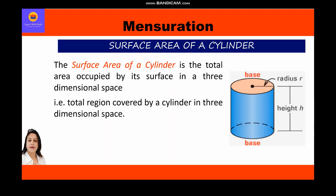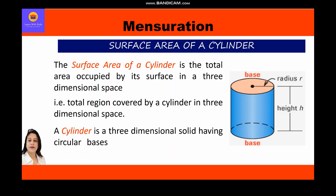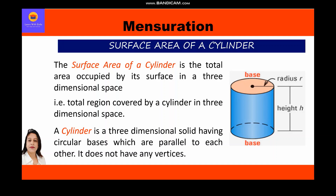We have to find the surface area of the cylinder — that is, the total area covered by the cylinder. A cylinder is a three-dimensional solid having circular bases which are parallel to each other. It does not have any vertices.